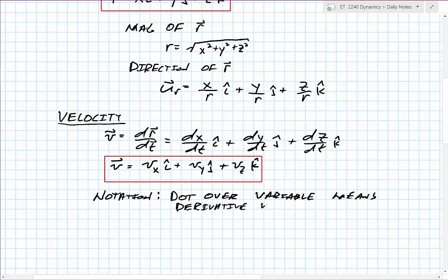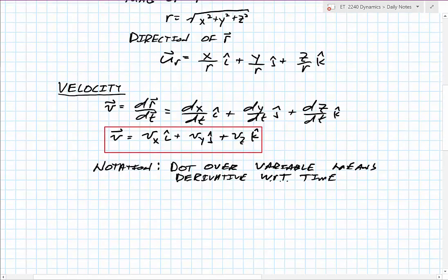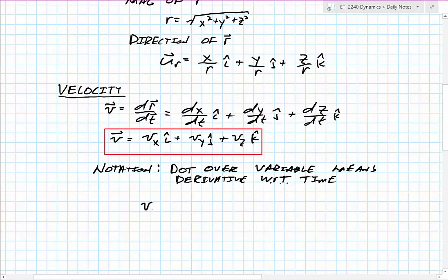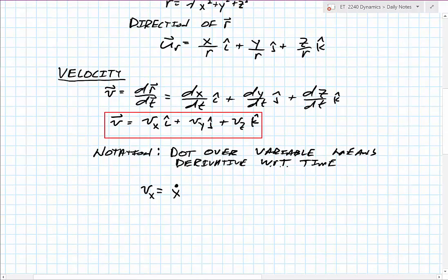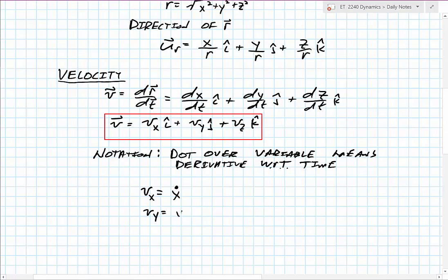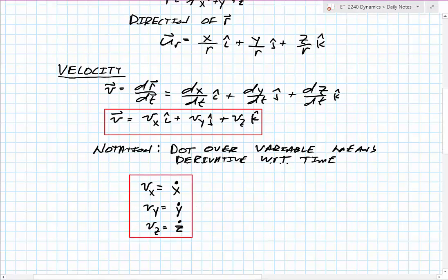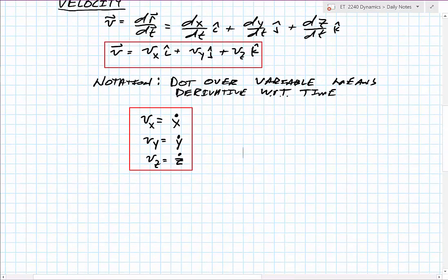The derivative with respect to time. So the velocity in the x direction can be denoted by x-dot, the velocity in the y direction is y-dot, and the velocity in the z direction is z-dot. The derivative of x with respect to time is velocity, same for y and z. That's the notation we'll be using in this course for the rest of the semester, and all of those are in vector form.